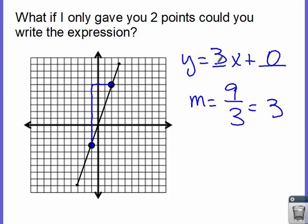So when we have y equals 3x plus 0, do we really need the plus 0? No — we can just write this as y equals 3x, because the y-intercept is 0 at the origin. Later on, we're going to find out that this is called a proportional relationship.